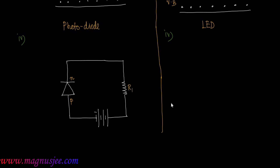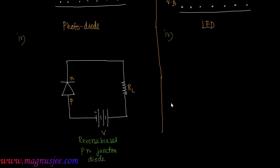A load resistance R_L is connected, and the EMF of this external battery is V. For the LED, we draw a forward biased p-n junction diode — the P-side is connected to the positive terminal of the battery and the N-side to the negative terminal.